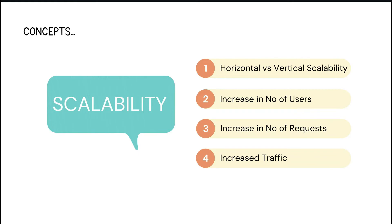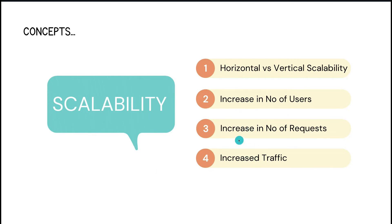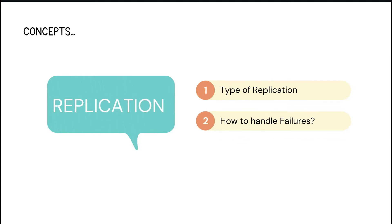What happens when the number of users increases? We might serve a few hundred requests on one system, but what if users increase and traffic increases? How do we really scale the system? You should understand this concept. Next is replication — how will our system respond in case of failures? How do we replicate data, how do we save it, and what type of replication do we use, such as chain replication?